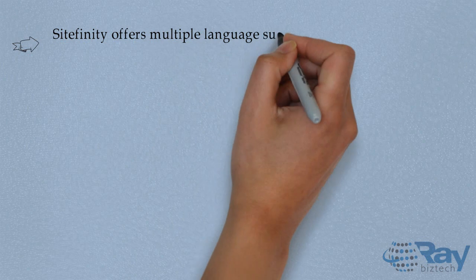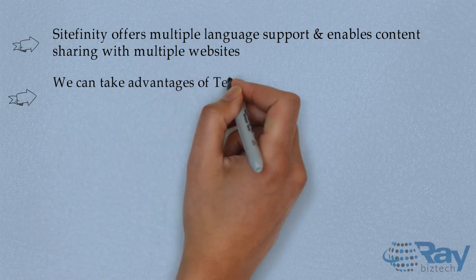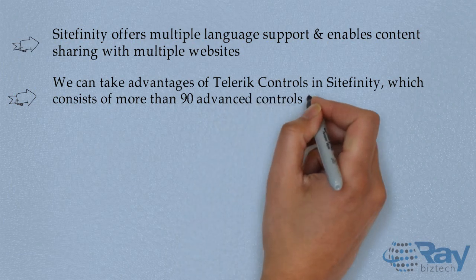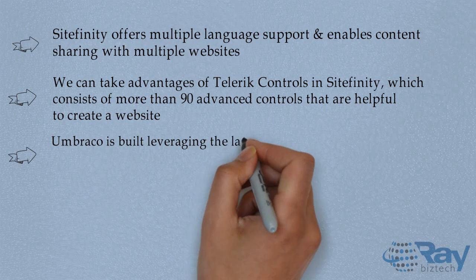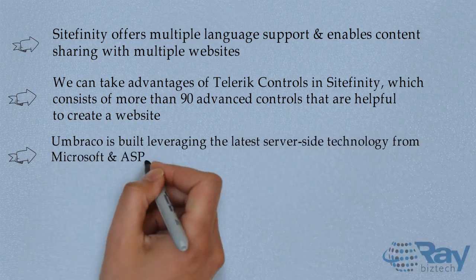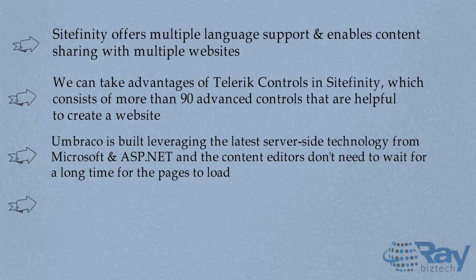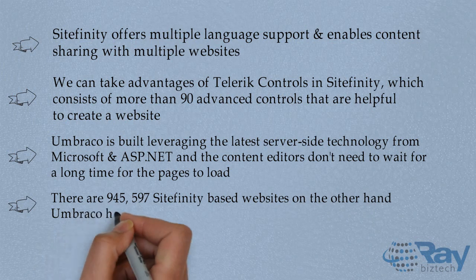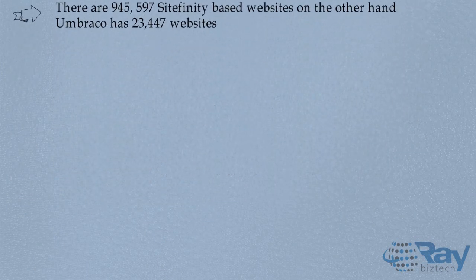Sightfinity offers multiple language support and enables content sharing with multiple websites. We can take advantage of Telerik's controls in Sightfinity, which consists of more than 90 advanced controls helpful to create a website. MBC is built leveraging the latest server-side technology from Microsoft and ASP.NET, and pages do not need to wait long to load. There are 945,597 Sightfinity-based websites, while Umbrako has 23,447 websites.